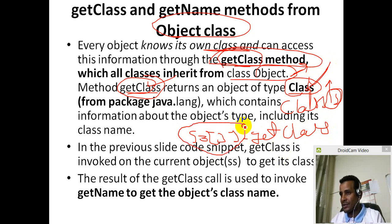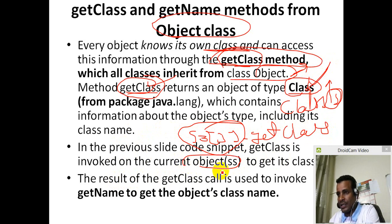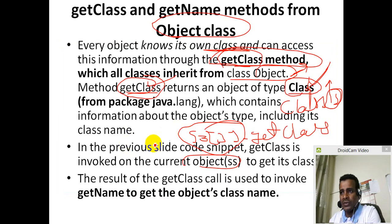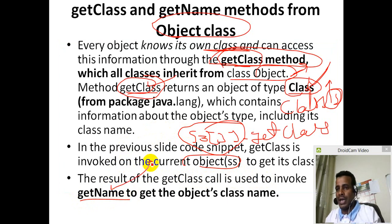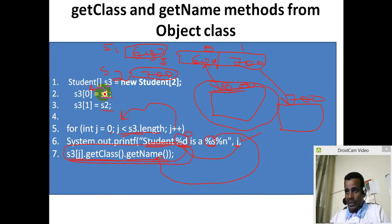In the previous slide code, getClass is invoked on the current object. The result is that the getClass qualities are getName. getClass is not the same. getClass class is the same. getName is the same. But the class is the same. We will look at it the same way.